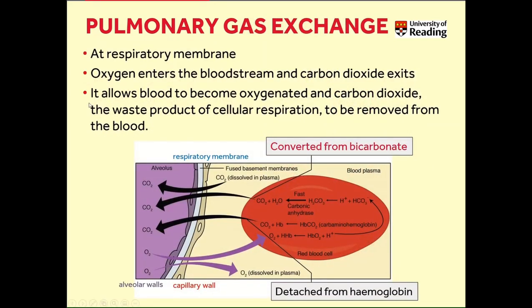Pulmonary gas exchange occurs at the respiratory membrane, shown in this figure in light blue. Oxygen enters the blood stream and carbon dioxide exits the blood stream. The pulmonary gas exchange allows the blood to become oxygenated, and carbon dioxide — which is the waste product of cellular respiration — to be removed from the blood.